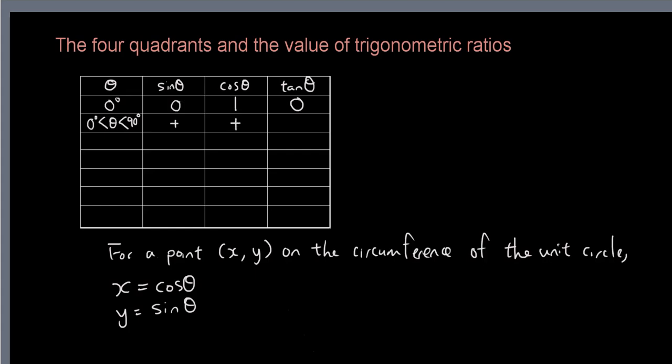Now what's tangent? Well, if you remember, tangent theta equals sine theta over cosine theta. If you have forgotten why, you probably have to look at our previous trigonometric ratio definitions. So if we have a positive number divided by a positive number, we get a positive number.